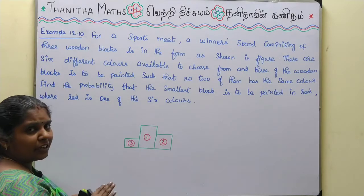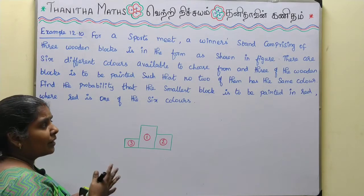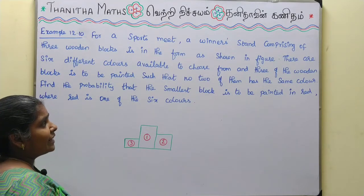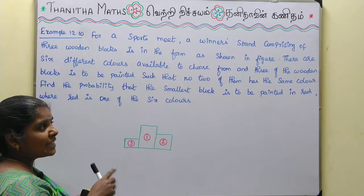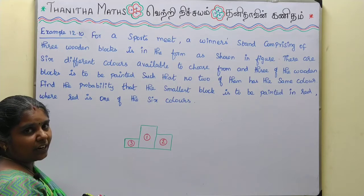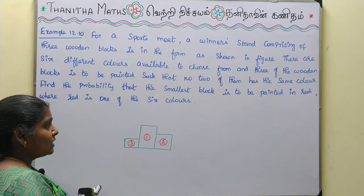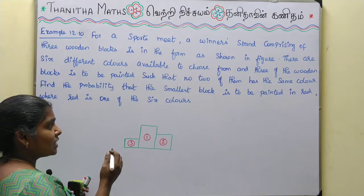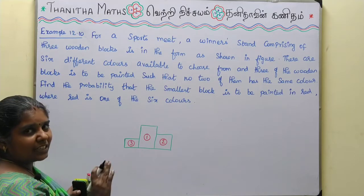So we need to find how many colors are available to choose from. Six colors are available to choose from. So the colors are C1, C2, C3, and so on up to six colors.